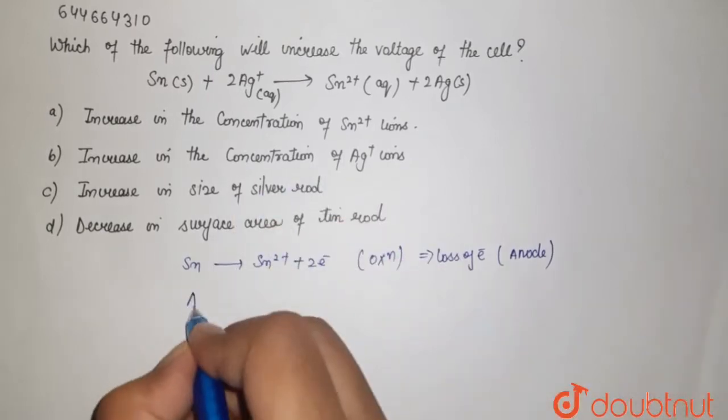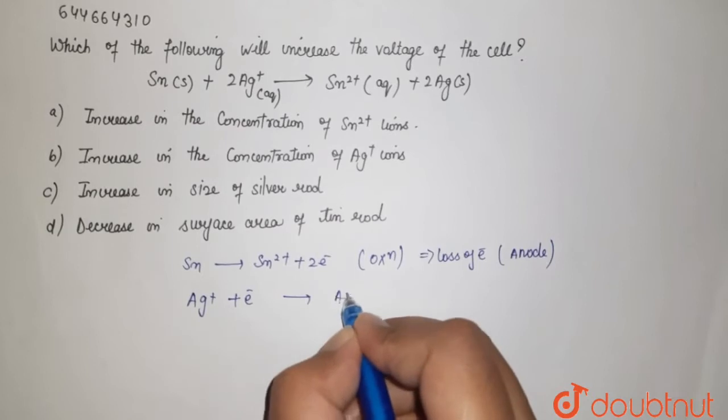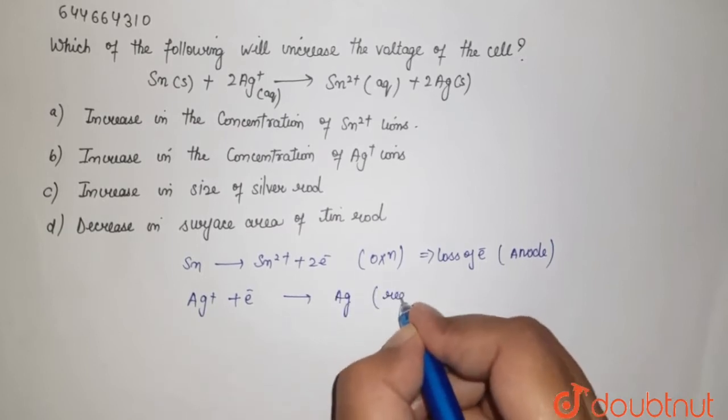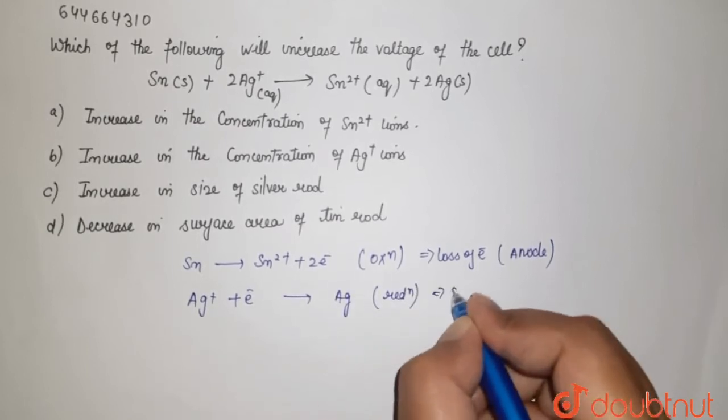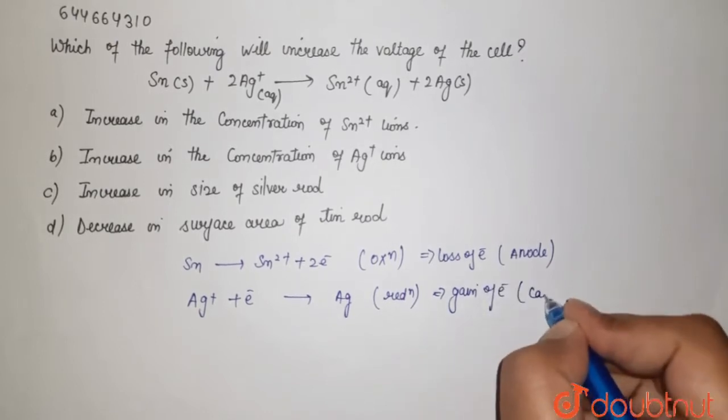And one is given that your Ag plus accepts one electron and gives you Ag. This means reduction process is happening. Reduction means there is gain of electron and this happens on your cathode compartment.